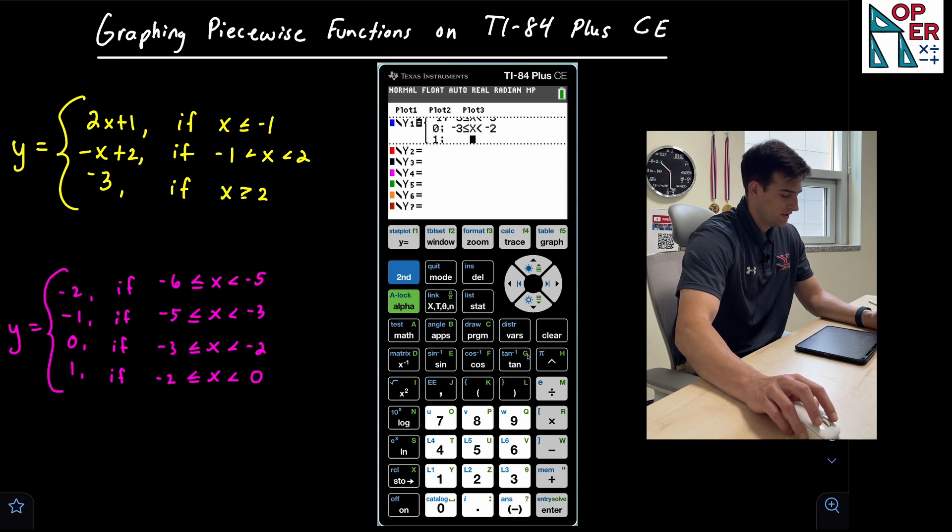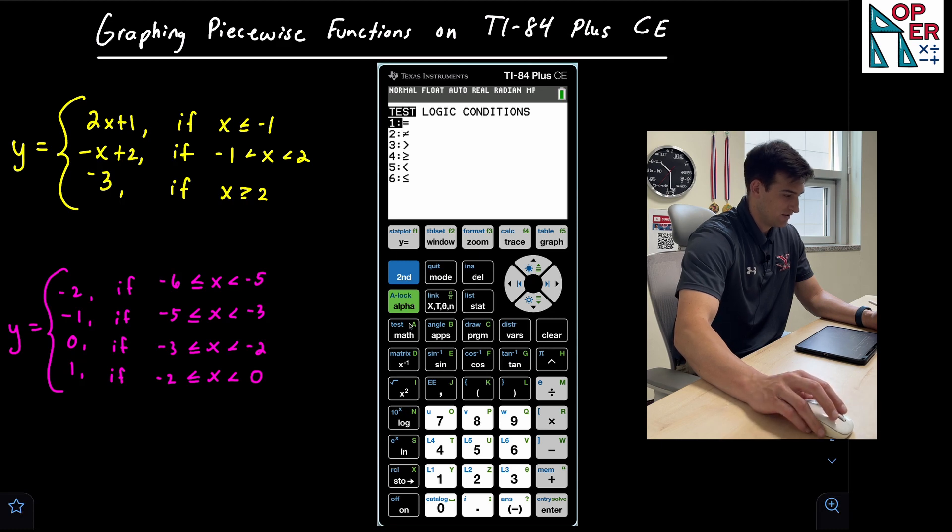And then lastly, for one, this would be from negative two, and then we want second math, and we want the sixth option again. Type in our variable X. Second math for the final time to get our less than symbol, which is option number five, and that's taking us all the way to zero. So now we can go ahead and graph it.